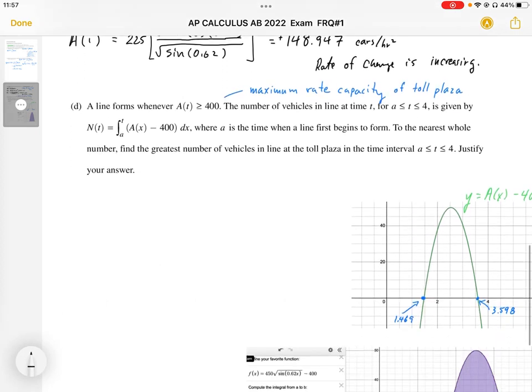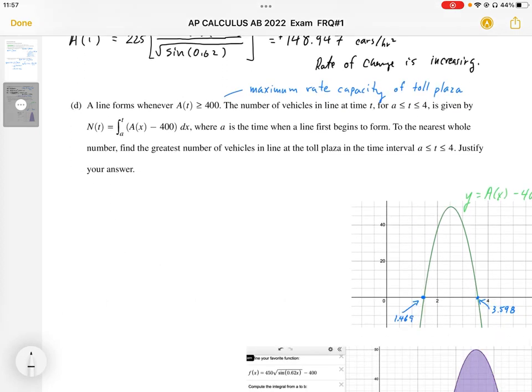Part D: A line forms when A(T) is greater than 400. So 400 represents the maximum rate capacity of the toll plaza, because as the number of cars come quicker than 400 cars per hour, we're going to start accumulating.